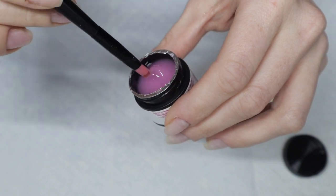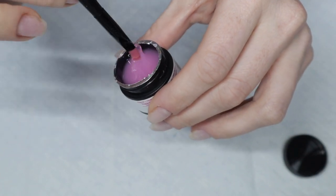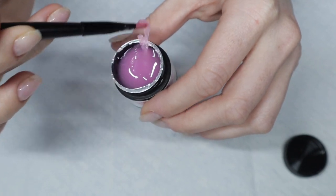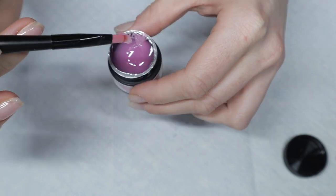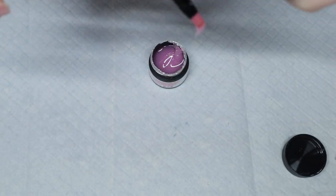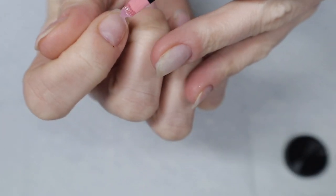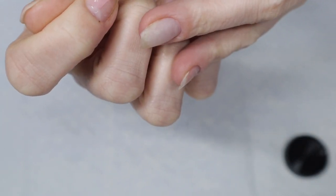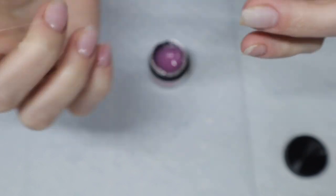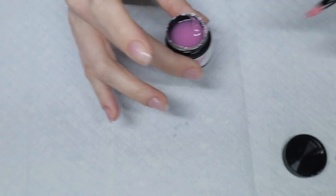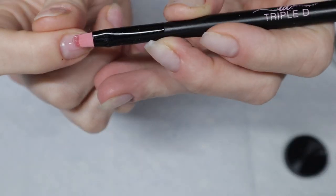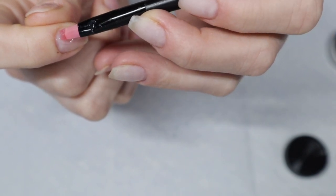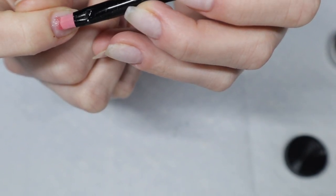Now that that nail is flash cured, I go ahead and work on the next nail. If you don't know what flash curing is, it means you're putting your nail in your lamp for about 10 to 15 seconds to hold the gel in place to stop it from moving around, but it's not fully cured. So I'm going to work on my index finger here, as you guys can see. And then after this one's ready, then I'm going to fully cure these two nails for 60 seconds.